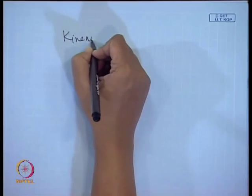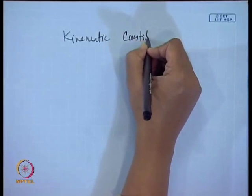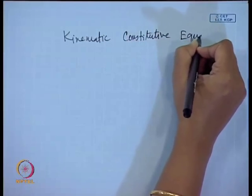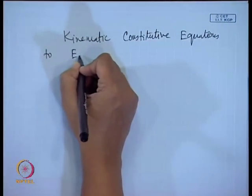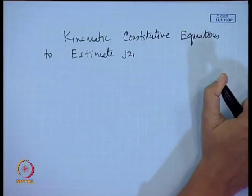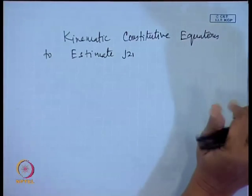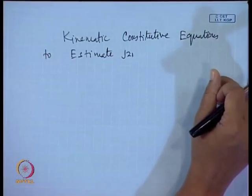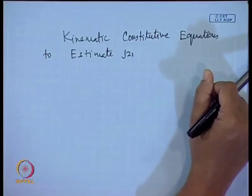Today we will be continuing our discussions regarding the different ways — the activity approach — to estimate j₂₁ by using different kinematic constitutive equations. We will be discussing the kinematic constitutive equations to estimate j₂₁. There are basically two approaches in order to estimate these kinematic constitutive equations. This model is particularly more useful when the relative motion can be determined by a few key parameters and is independent of the flow rates of each phase.